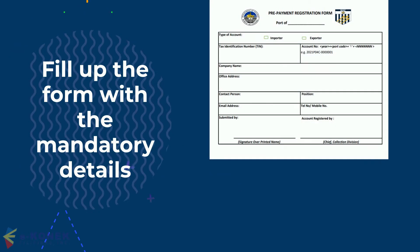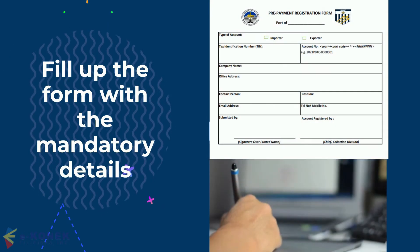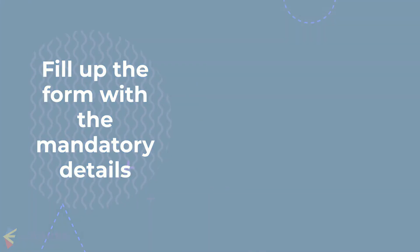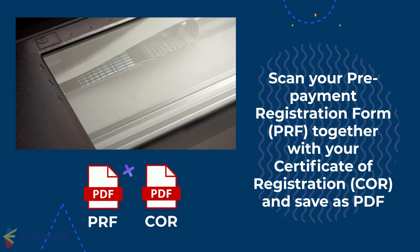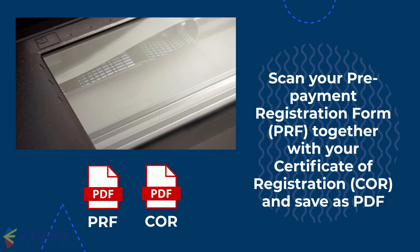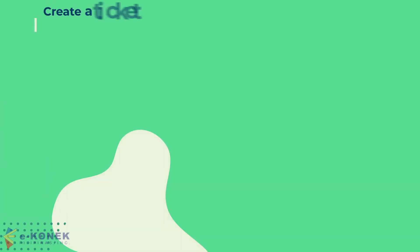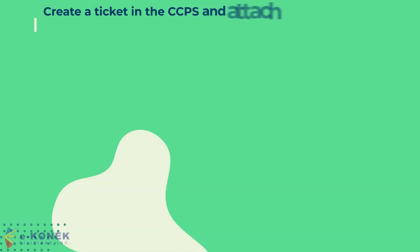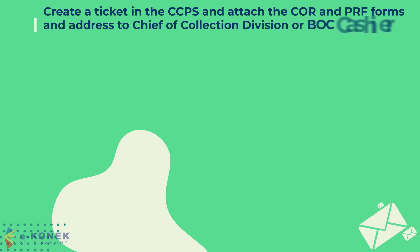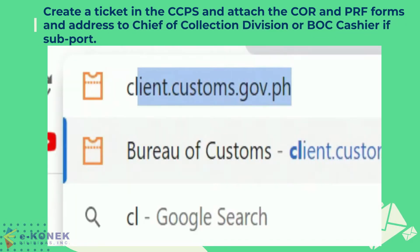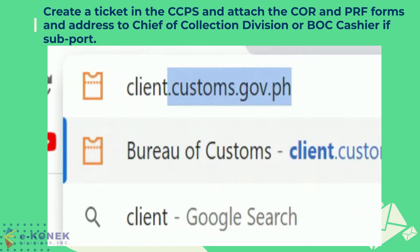Fill up the form with the mandatory details. Scan your PRF form and your COR, then save as PDF. Create a ticket in the CCPS and attach the COR and PRF forms, addressed to the Chief of Collection Divisions or BOC cashier if supported.